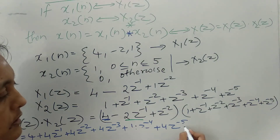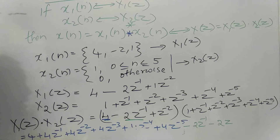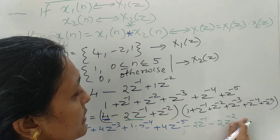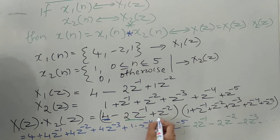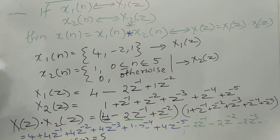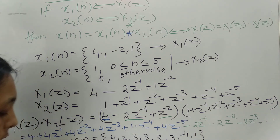With minus 2Z inverse: minus 2Z raised to minus 1 into Z raised to minus 1 gives Z raised to minus 2, then minus 2Z raised to minus 3, and so on for each term. Finally, you obtain a series and the answer is: 4, 2, 3, 3, 3, 3, 3, minus 1, 1. You can verify this yourself.